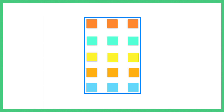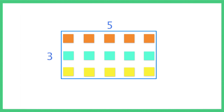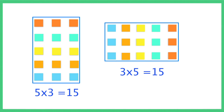Multiplication facts can also be depicted by the area of a rectangle. For example, 5 times 3 is an array of 5 rows and 3 columns forming a rectangle. Now let students find out 3 times 5, that is 3 rows and 5 columns. In both cases, the product is 15, arrived at differently, and in each case the shape is a rectangle.